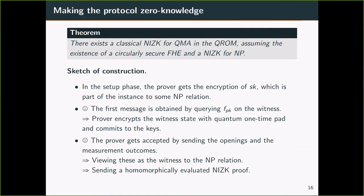In the last step, the prover gets accepted by sending the openings and the measurement outcomes, which makes the protocol not zero knowledge. So we get around this by viewing these strings as a witness to the NP relation. Instead of sending the witness in the plaintext, the prover sends a homomorphically evaluated NIZK proof. So by the zero knowledge property of the NIZK scheme, the protocol is zero knowledge.